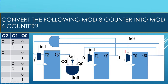For q1, it is already 0 and we want it to remain 0, so I do not want to toggle q1 — I pass 0 to T1. For q0, it is currently 1 and we want it to go to 0, so when 'in' is high, the mux passes a 1 to T0 to toggle q0 from 1 to 0.